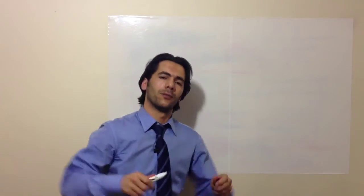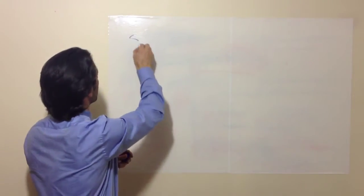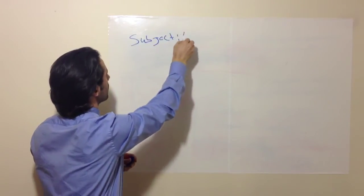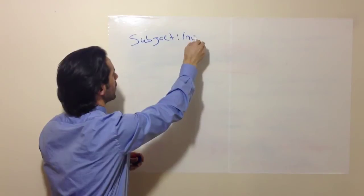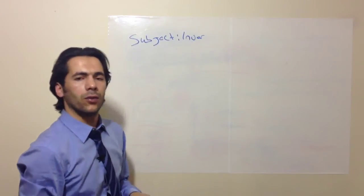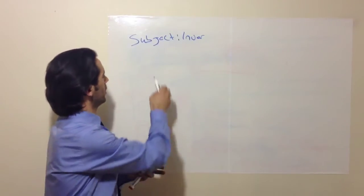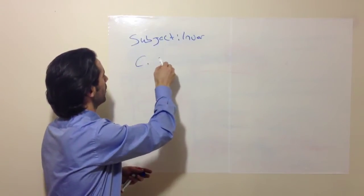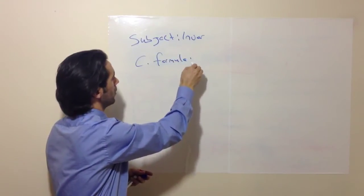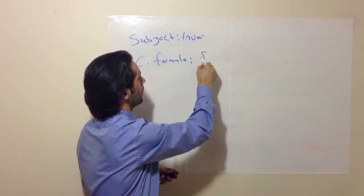So this is our subject, Invar. As I said before, Invar contains iron and nickel. So we are supposed to add iron and nickel in chemical formula.